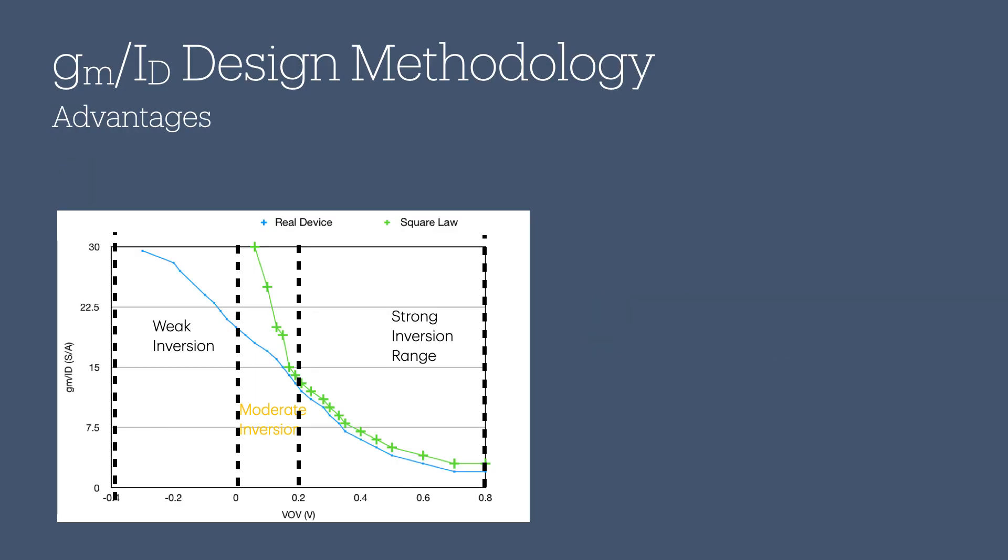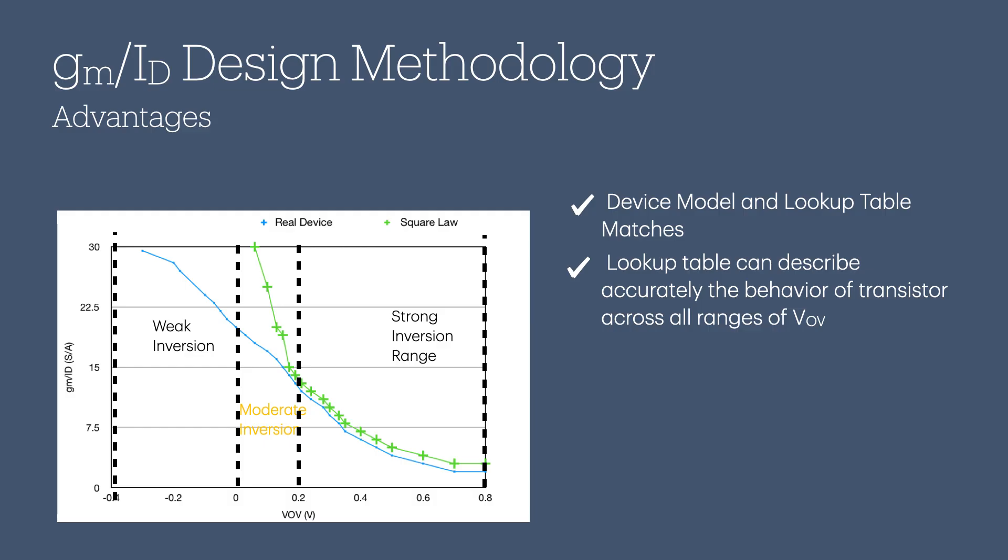Here's the graph showing all the inversion levels of the transistors. As a summary of this section, here are the advantages of using the GM over ID technique when developing analog circuits. First, device model and lookup table matches across the entire range of overdrive voltage. Second, without being math heavy, the lookup table can accurately describe the behavior of the transistor across all ranges of VOV, and the trade-off from other figures of merit can be easily observed. Third, we can eliminate the need for VOV as the design parameter. Instead, we use the GM over ID that relates to all other figures of merit. End of the lecture.